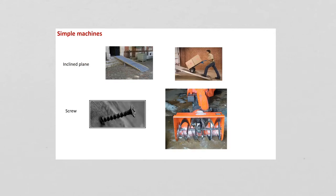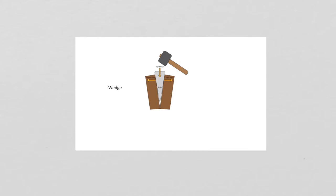Next, we have the inclined plane, which is simply a plank that is used to elevate a load from a lower level to a higher level, or lower a load from a high level to a low level. Then we have the screw, which essentially is an inclined plane that is wrapped around a post. Another example of a screw would be the auger of a snowblower. And finally, we have the wedge, which is simply two inclined planes that are in contact.